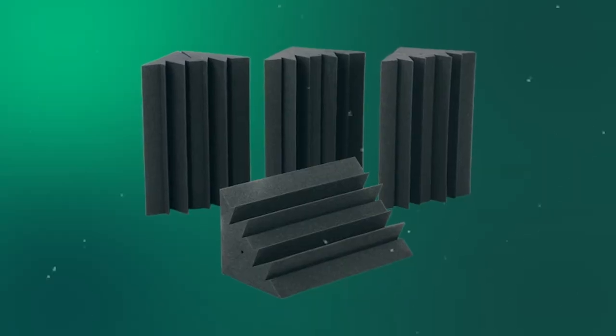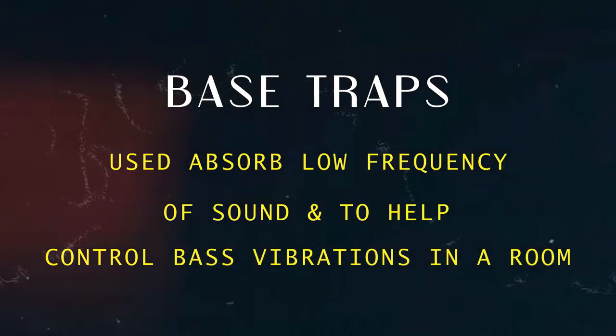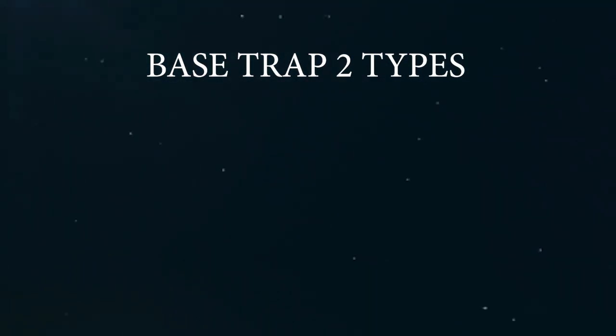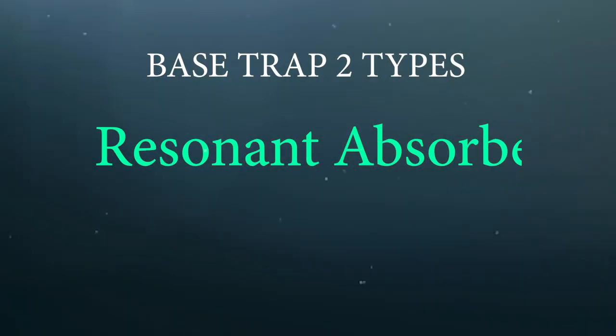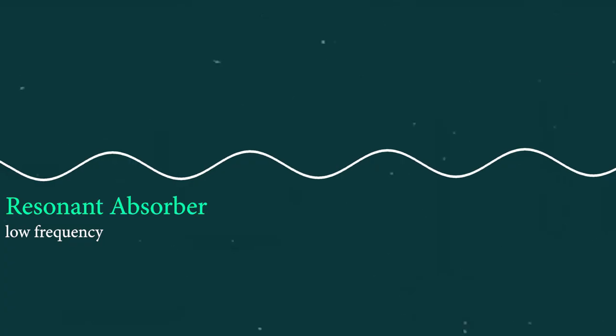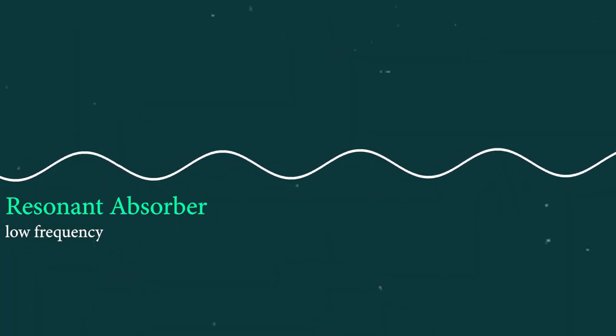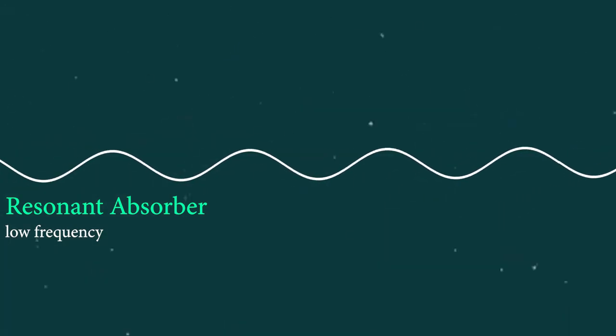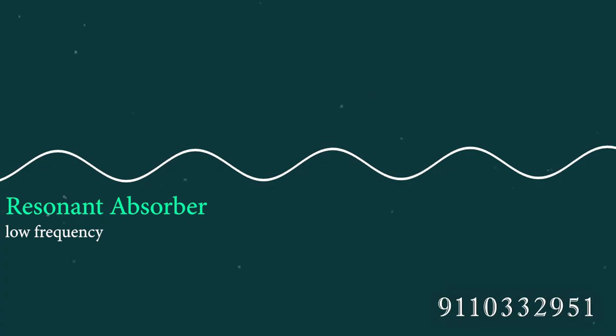Please watch this video. Particularly, bass traps can absorb low-frequency sound. There are two different varieties: one is a Resonant Absorber, and the other one is a Porous Absorber.